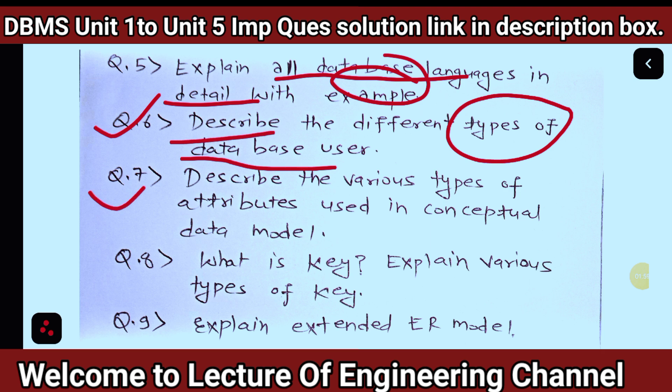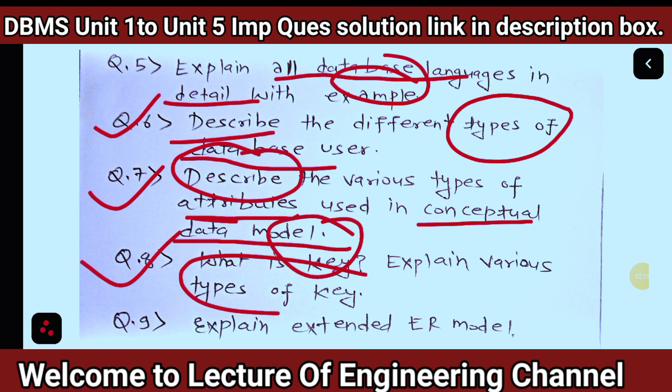Question number seven, yahan pe jitne sara attributes hote hai, used in the conceptual data model, usko yahan pe describe karna hai. Ki kya hote hai, iska type kya hote hai. Question number nine, explain extended ER model.